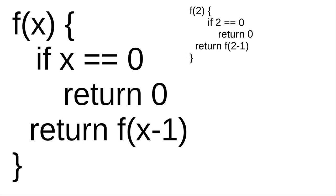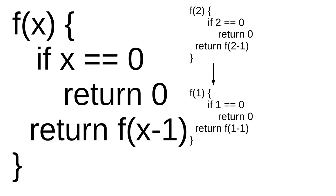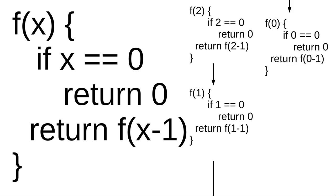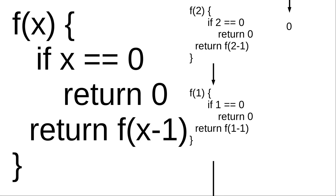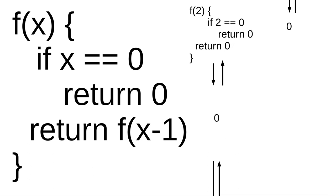So we have our f and we're calling it with a 2. In place of x we have a 2, and we're going to recursively call f again with 2 minus 1 because x is not equal to 0. Now we have f being called with a 1, and again x is not equal to 0, so we recursively call f again. Then f is called with 0, and because it's equal to 0, we return 0 — this is the base case, telling our recursive function to stop recursing. That 0 returns back through each calling function, and the result of this execution is just 0.